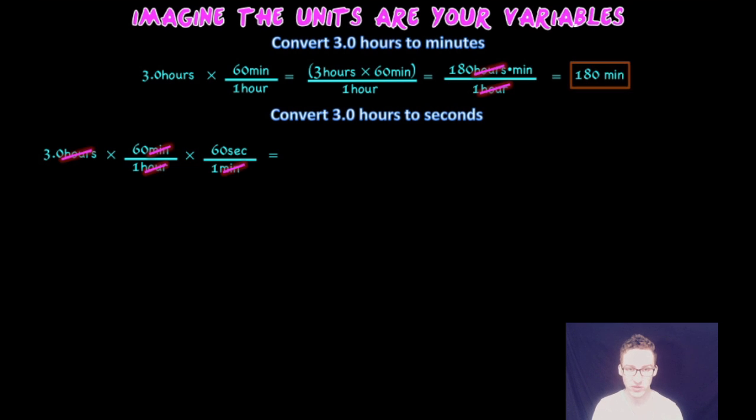As long as you've got one of those units in the numerator and that same unit in the denominator, it will cancel out and there's no need to carry it through the calculation. So this becomes 3 times 60 times 60 seconds over one times one, which will simplify to 10,800 seconds over one,